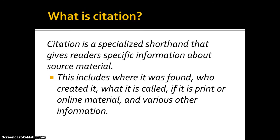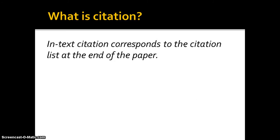Citation is, at its heart, a specialized shorthand that just gives your readers specific information about source material. The kinds of information included in every citation are things like where the original material is found, who created it, what it's called, if it was a print or an online material, and various other information. There are two kinds: the in-text citation and a citation list at the end of the paper. Both are important and they need to refer to one another. The in-text citation is shorter, but it tells your reader how to find the information at the very end of your paper.